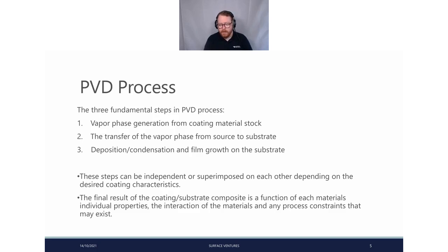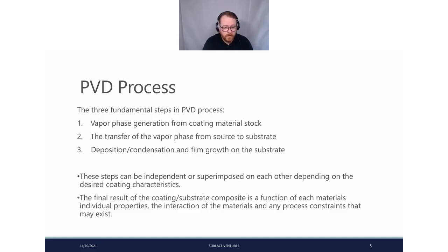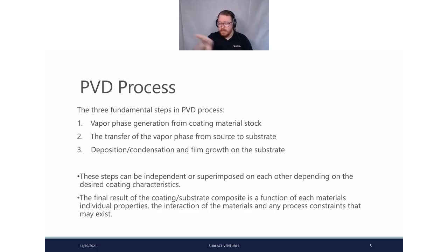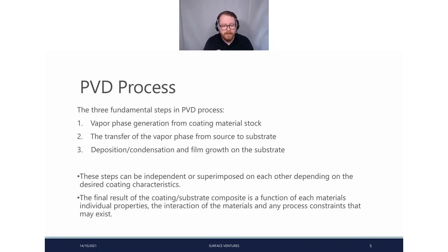The three fundamental steps of PVD are: the actual vapor phase generation from the material stock — either solid or liquid; transfer of the vapor phase, transporting the material being deposited to the substrate; and the actual deposition, condensation, and film growth.